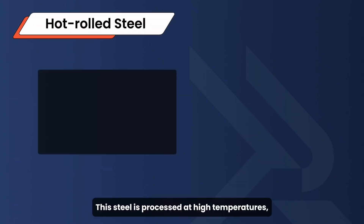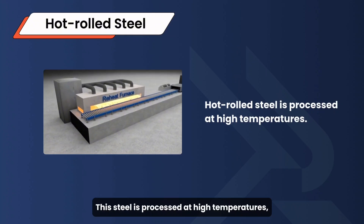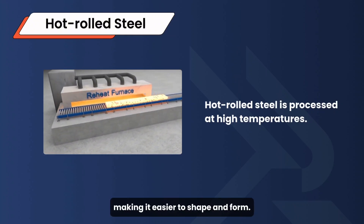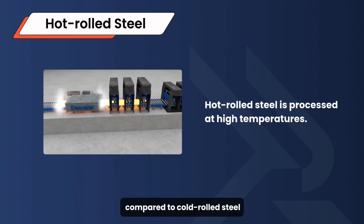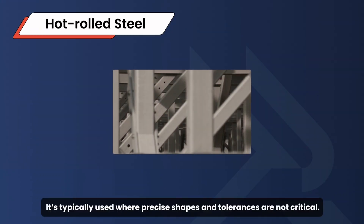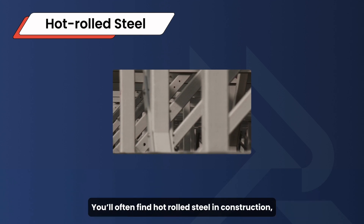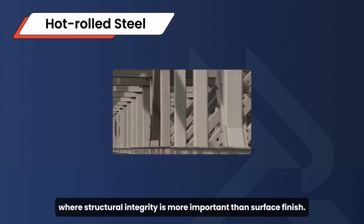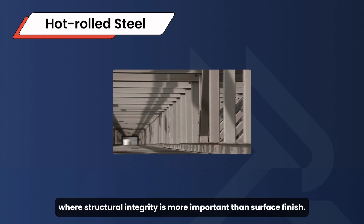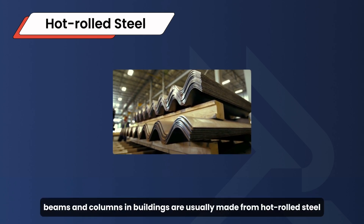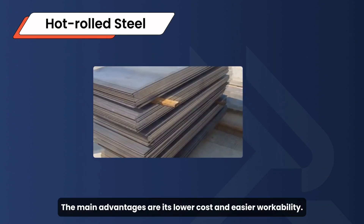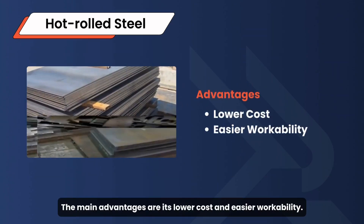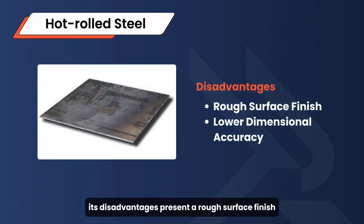First up, hot rolled steel. This steel is processed at high temperatures, making it easier to shape and form. Hot rolled steel has a rougher surface and less precise dimensions compared to cold rolled steel, and it's typically used where precise shapes and tolerances are not critical. You'll often find hot rolled steel in construction, where structural integrity is more important than surface finish. Beams and columns in buildings are usually made from hot rolled steel because of its strength and low cost. The main advantages are its lower cost and easier workability; however, its disadvantages include a rough surface finish and lower dimensional accuracy.